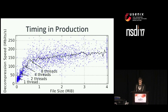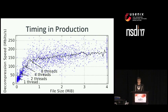Here are some timings from actual decodes in production. At 8 threads, it gets about 150 megabits per second. With fewer threads it gets less. We actually turn off threads for small files because the thread startup cost dominates the cost of decoding, so we end up decoding them at a slower rate with fewer threads.